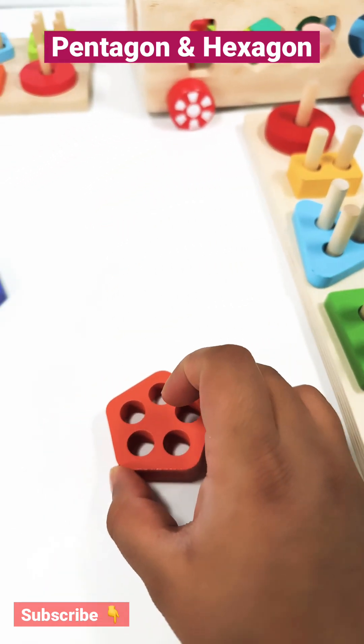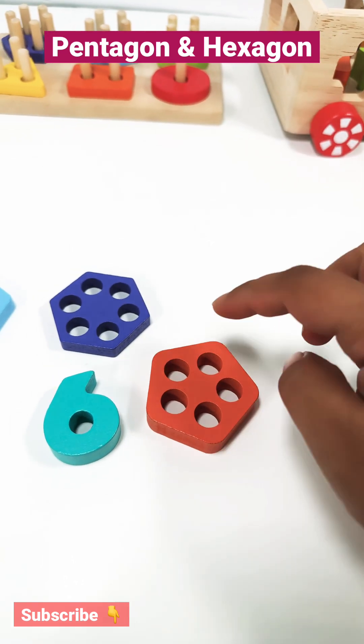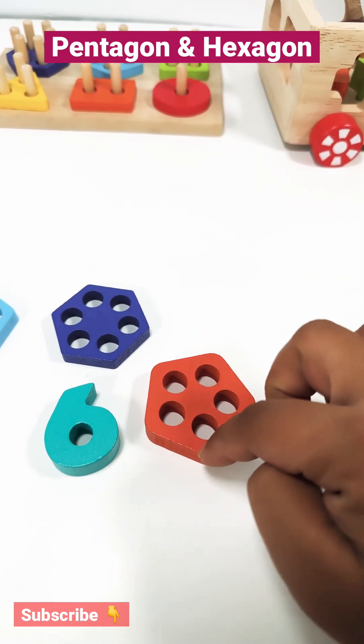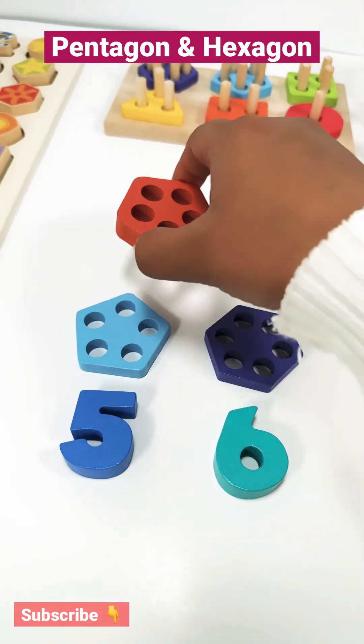This one looks like the similar shape. Let's count the number of sides. One, two, three, four, five. So a pentagon.